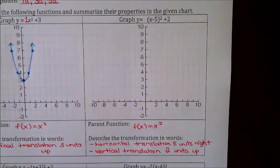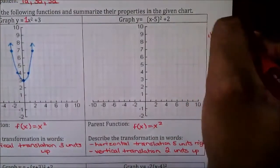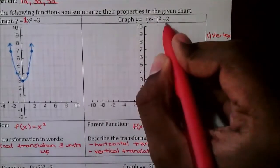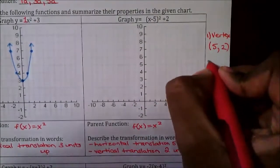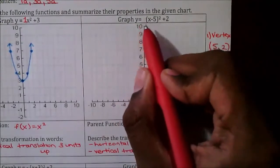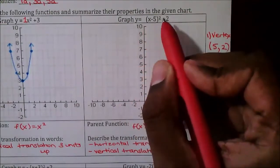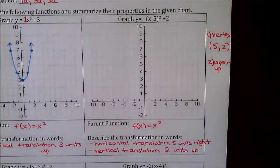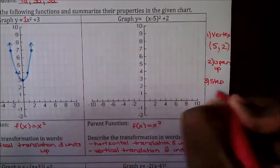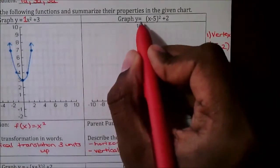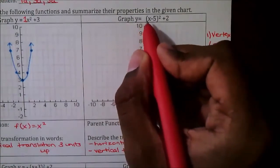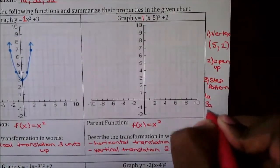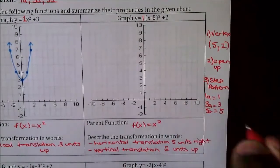We follow the same three steps. The vertex: our h value is negative five, so we take the opposite — positive five — and our k value is two, giving vertex (5, 2). The sign in front of the bracket with x² is positive, so it opens up. There's no written number in front of the bracket, so a = 1, giving step pattern 1a, 3a, 5a = 1, 3, 5, just like the previous question.